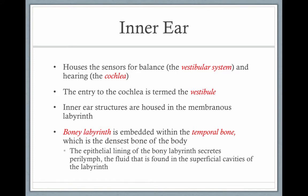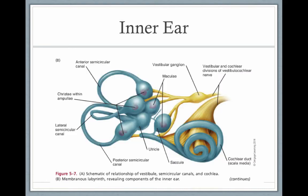The inner ear houses the structures for the balance system, the vestibular system, and the hearing system, the cochlea. The entry to the cochlea is termed the vestibule. Both structures are housed in a membranous labyrinth. The bony labyrinth is embedded within the temporal bone, which is the densest bone of your body. The lining secretes perilymph, which is the fluid found in the superficial cavities of the labyrinth. The vestibular system is on the left and the cochlea is on the right, but they share fluid.